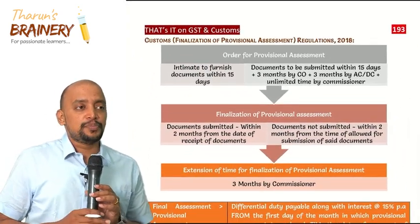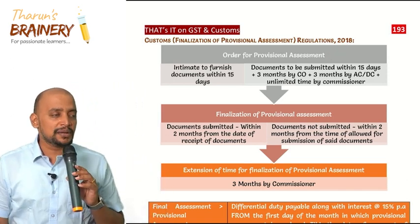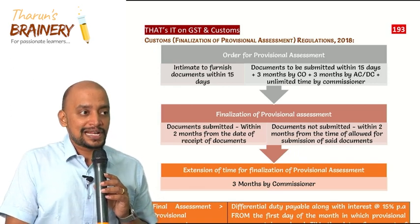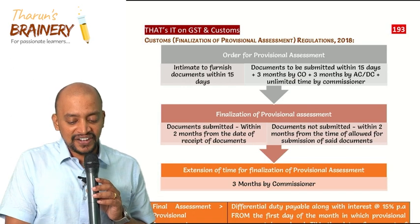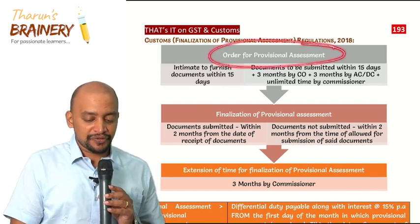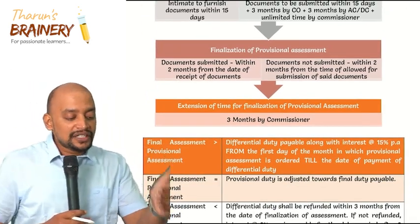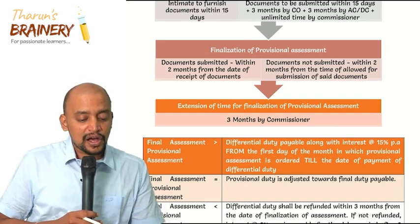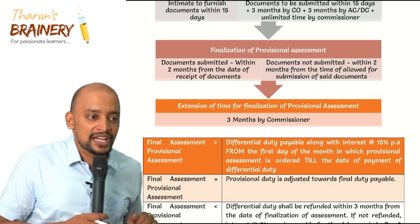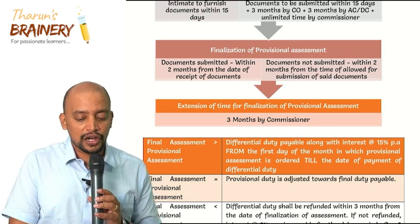Whenever provisional assessment happens, first a provisional assessment order is passed and the person is intimated to furnish documents within 15 days. This can be extended for a further period of 3 months by the customs officer, another 3 months by AC/DC, plus unlimited time by the Commissioner. After the provisional assessment order, the final assessment should happen: if documents are submitted, within 2 months from the date of submission; if documents are not submitted, within 2 months from the expiry of the time allotted for submission.